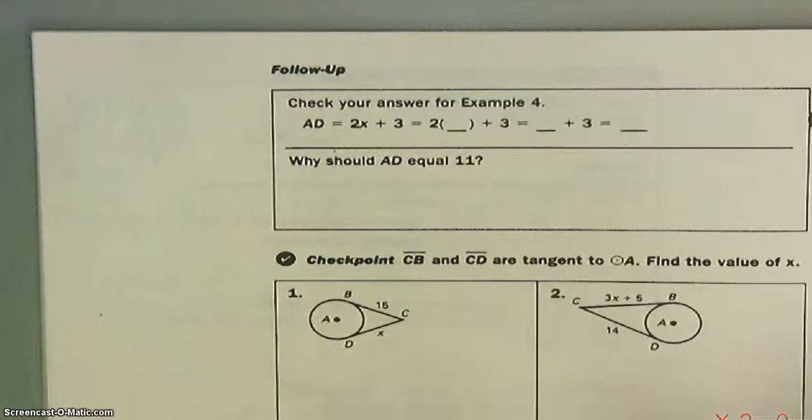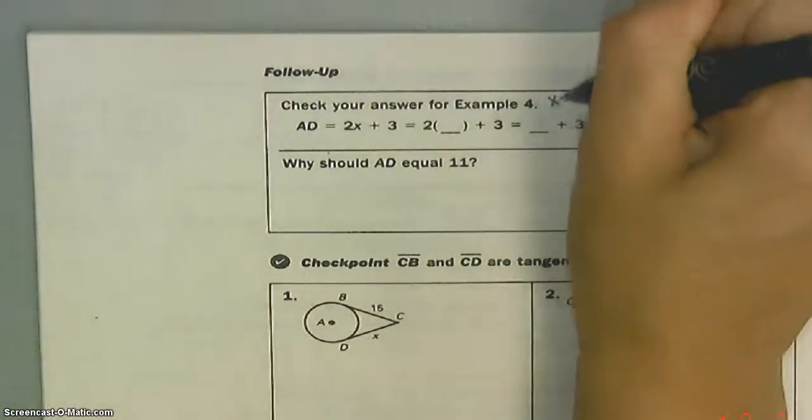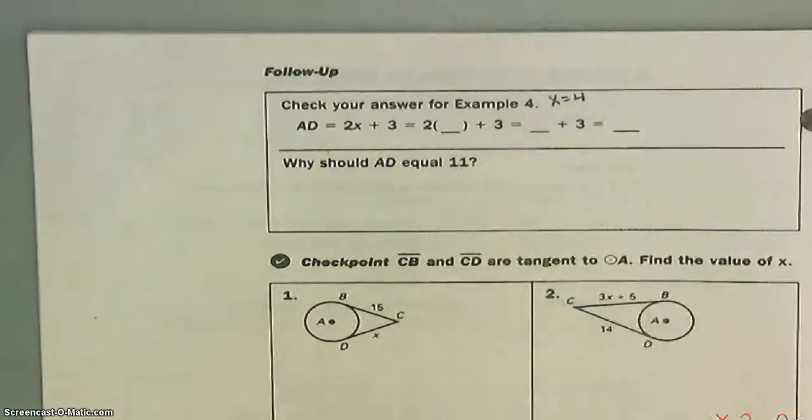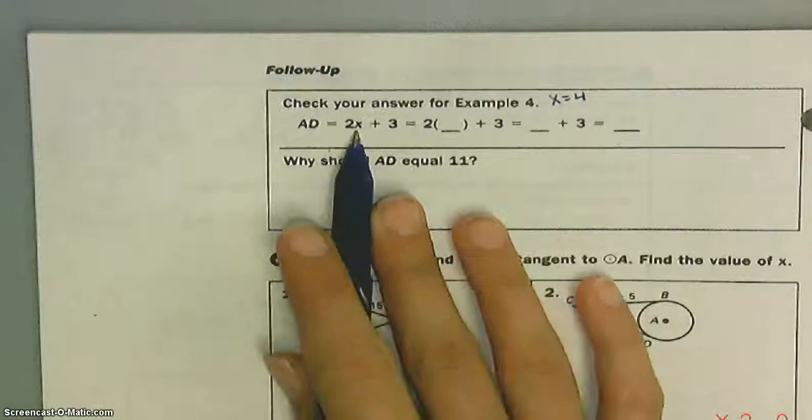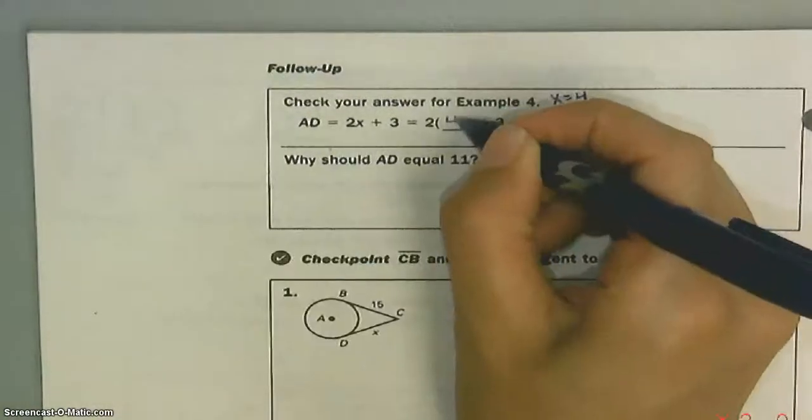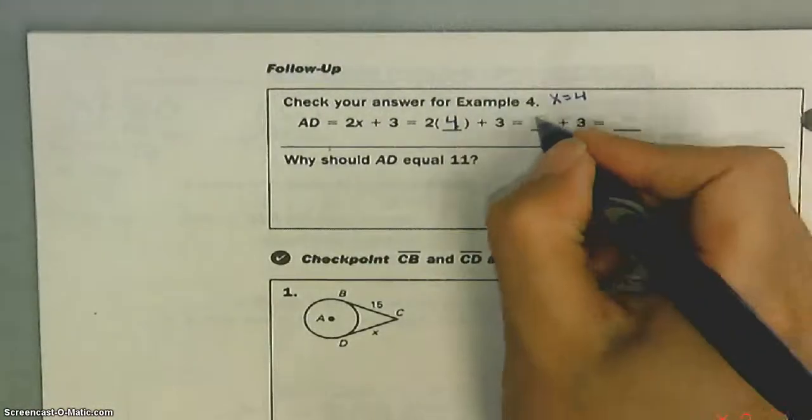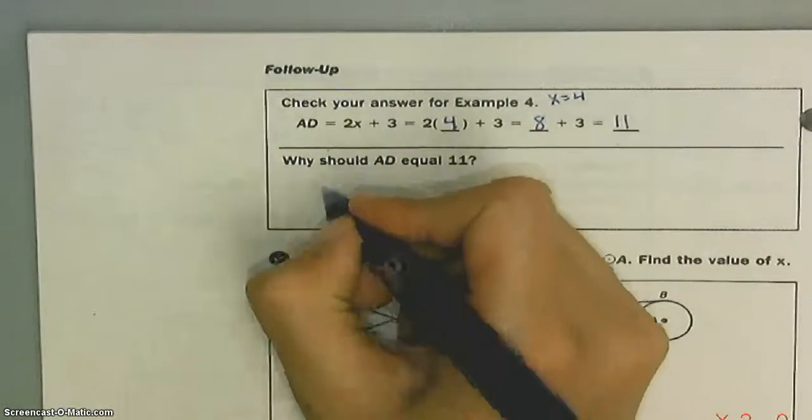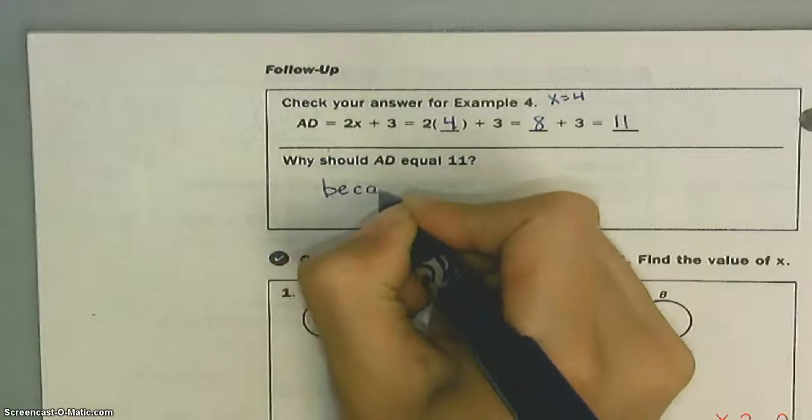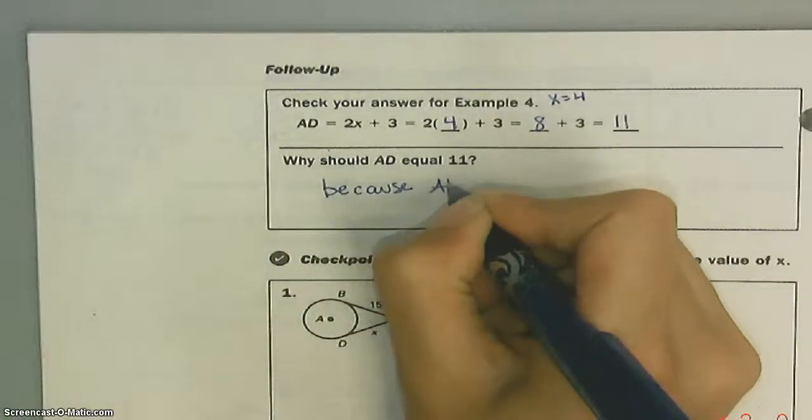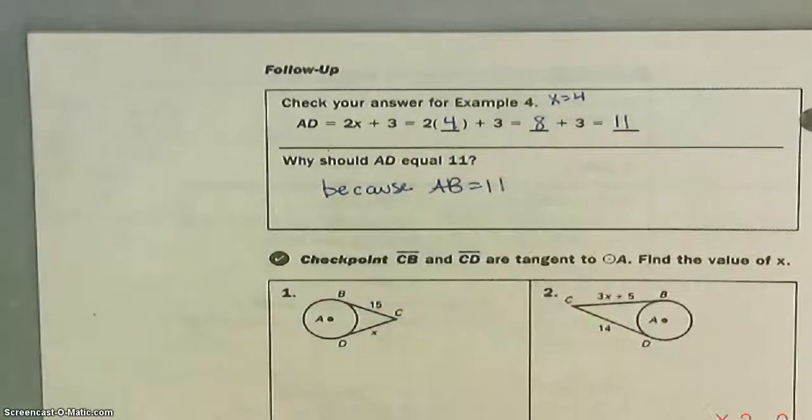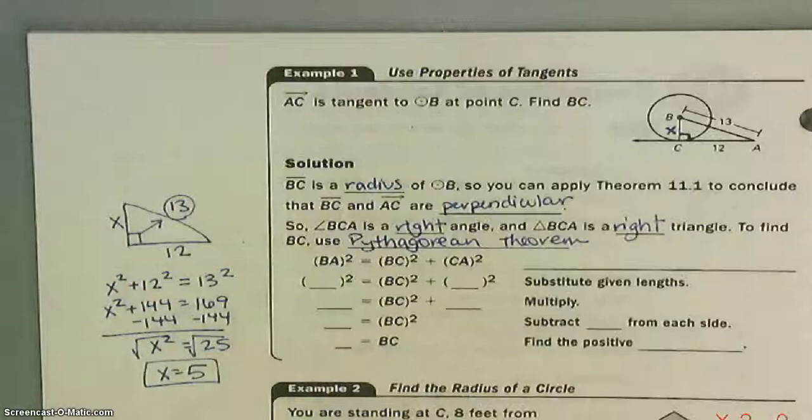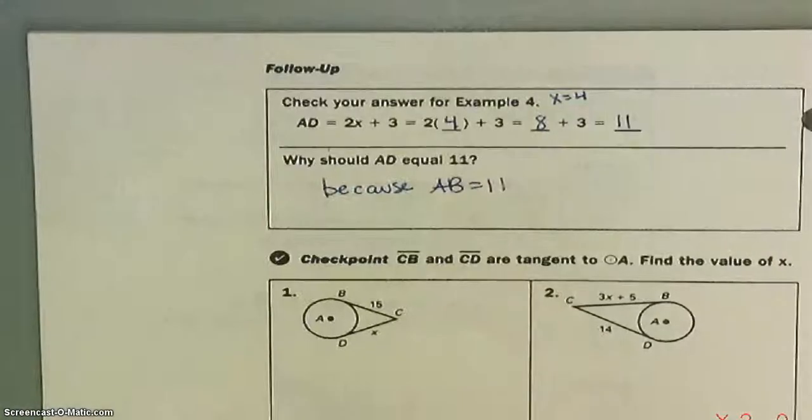Check your answer for example 4. If you remember, we've got X equals 4. We're going to plug that back in and see if we did it right. 2 times 4 is 8. 8 plus 3 is 11. That's perfect. That's exactly what we wanted. Why should AD equal 11? Because AB equals 11. And they're supposed to be the same length. That was AB. Yep. Because AB equals 11.